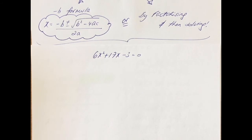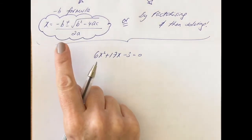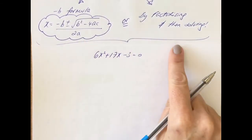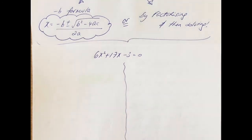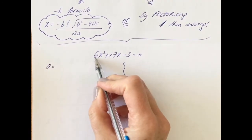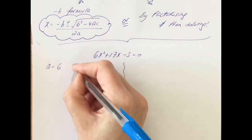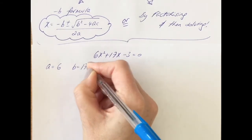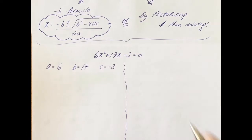So try this question if you feel confident — press pause and solve this quadratic by using both methods, the formula and by factorising. I'm going to use the formula first. Identifying what a is: a is always the number before the x squared, or the coefficient of x squared, which is 6. B is the coefficient of x, which in this case is actually 17. And c is minus 3.